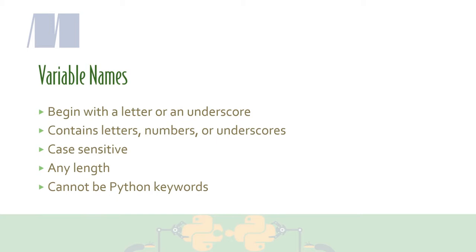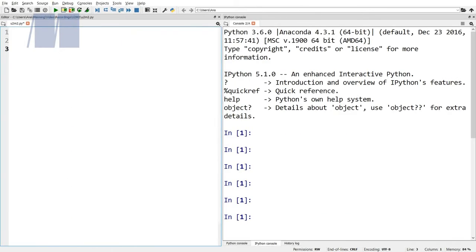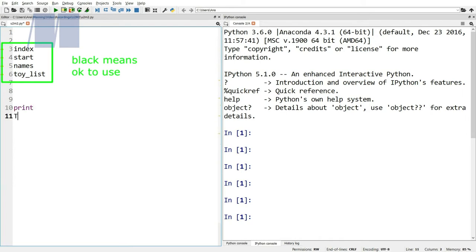There are a few reserved keywords that you can't use as variable names. Spider, the IDE that we're using, has syntax highlighting, which changes the color of words that are special reserved Python keywords. Let's switch over to our file editor so we can see an example of syntax highlighting. A good general rule is that if the variable that you want to use turns a different color in your editor, then you shouldn't use it as a variable name.